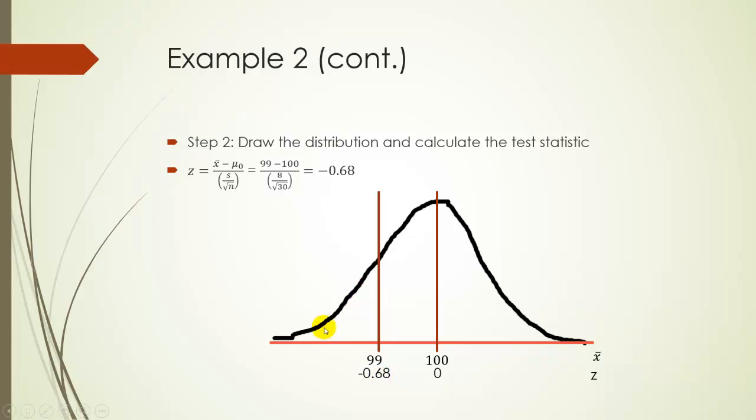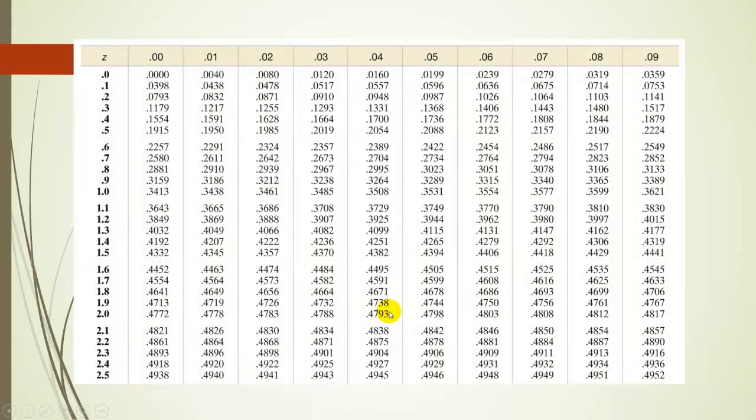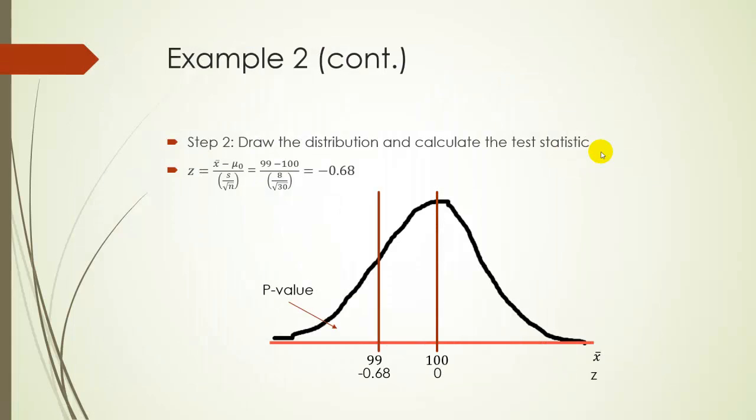Since we're doing a left-tailed test, our p-value is going to be this area to the left. So let's go to the table, look up the area between 0 and Z. Remember, our Z was negative 0.68, but that's okay. So 0.68, we'll just look up the positive one, because we know it's symmetric. And we get 0.2517. So the area between 0 and Z is 0.2517. So subtract that from 0.5, and you get 0.2483. That is our p-value.